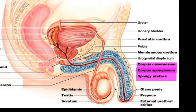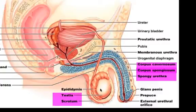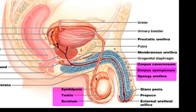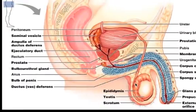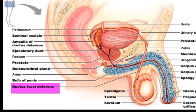Down below is the scrotum, which is basically skin and fat that houses the testes. The testes is this egg-shaped organ, and we'll explain in a moment how it functions. Behind the testes is the epididymis, and the tube from the epididymis is the vas deferens, which connects up and around over the urinary bladder to the urethra.